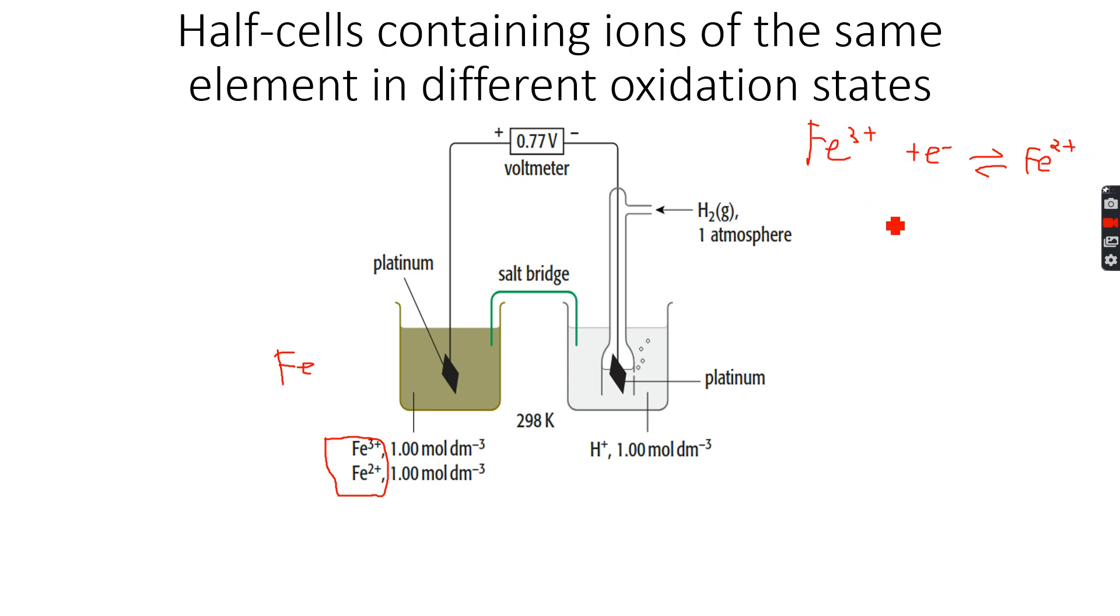And since there is no metal, there is no solid in this reversible reaction, you will have to use a platinum electrode. So remember, whenever there is no solid in the reversible reaction, in the equilibrium, then you will use a platinum electrode. So in the case of gases or in the case where you are testing two ions together instead of a metal and its ion, then you will be using a platinum electrode.